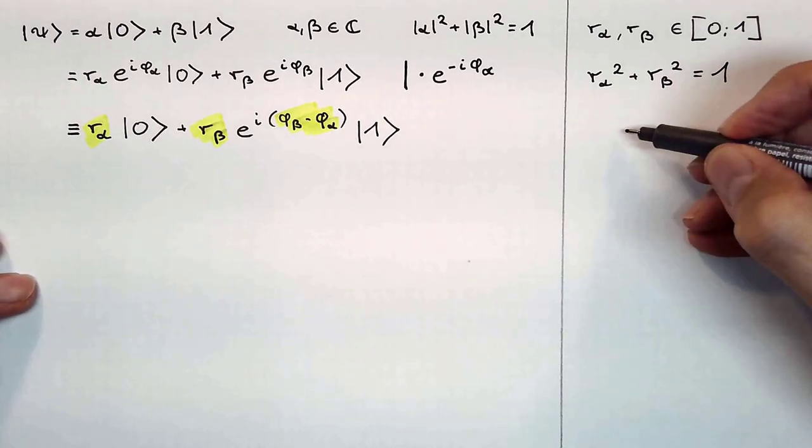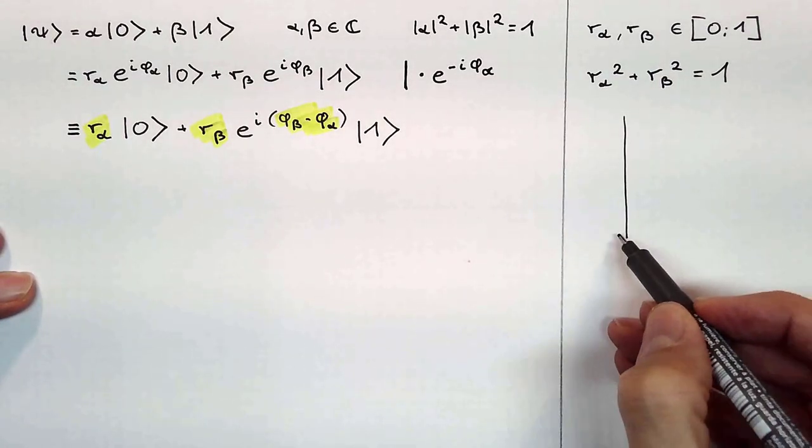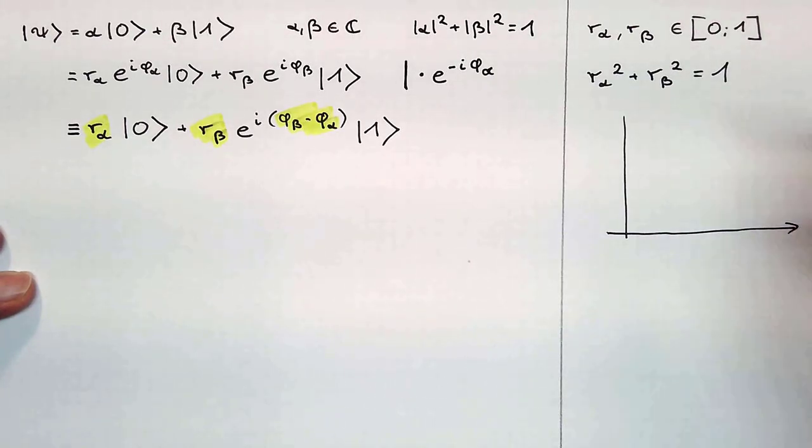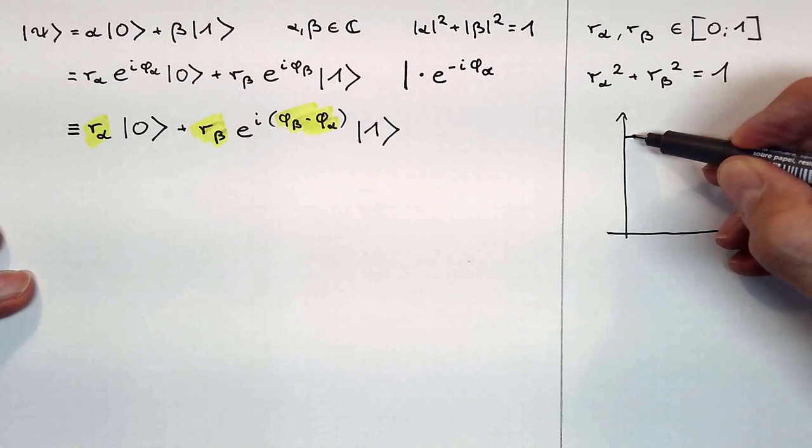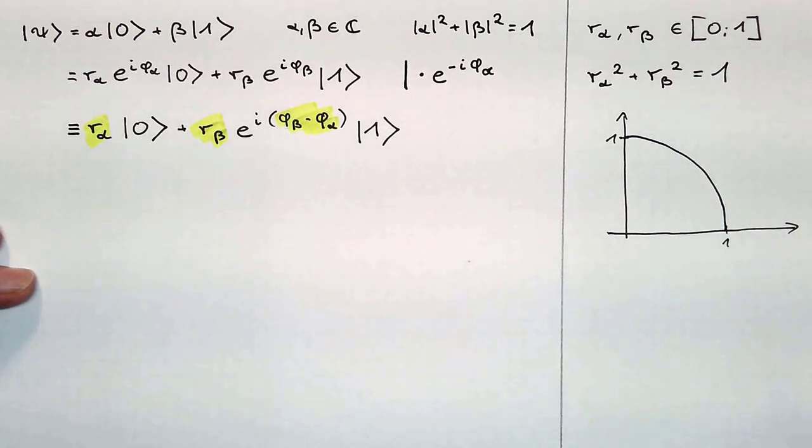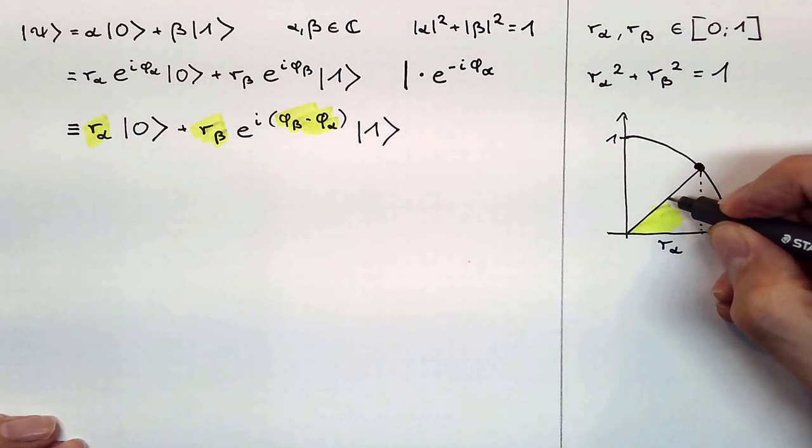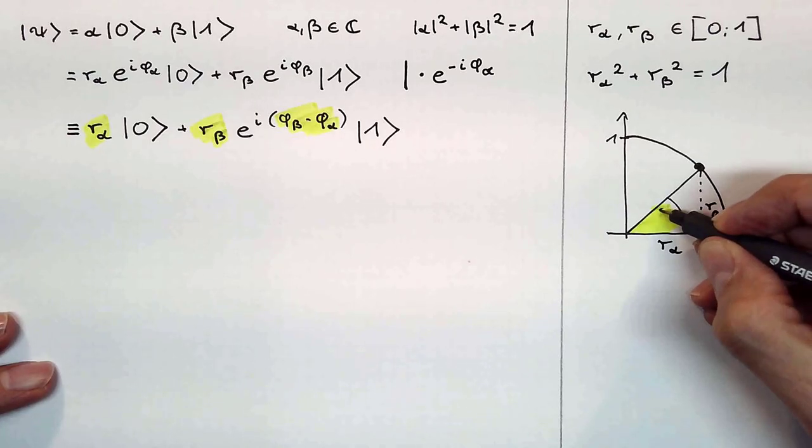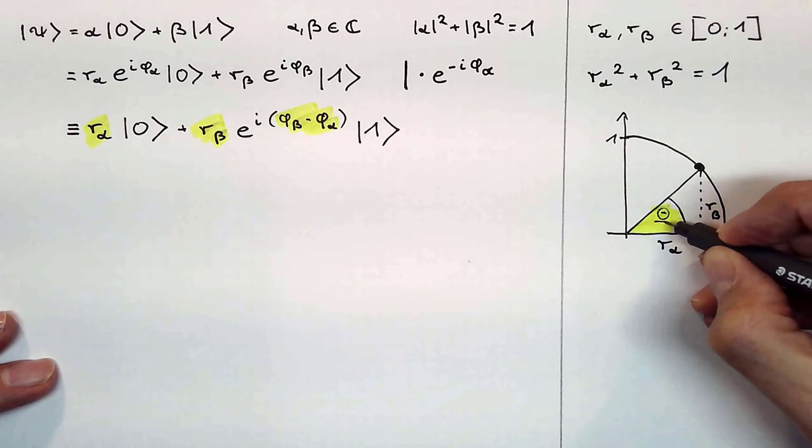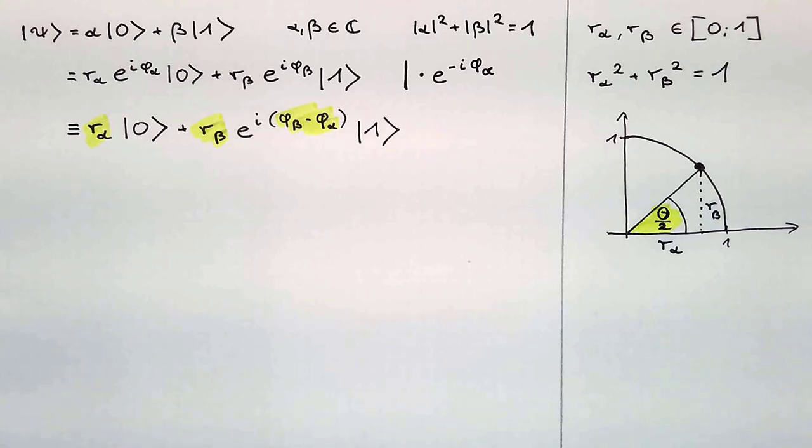With this, we can represent the dependence between r_alpha and r_beta in the unit circle. It's enough to draw the circle in the first quadrant as both values are positive numbers. As the sum of the squares of r_alpha and r_beta is 1, these two values define the position of a point on this quarter circle, according to Pythagoras. As this sketch shows, we can describe the dependence between r_alpha and r_beta with an angle that I mark here in yellow. For certain reasons, we will name this angle zeta half and not zeta, as this is important for later when we will visualize the state of a qubit on the Bloch sphere.